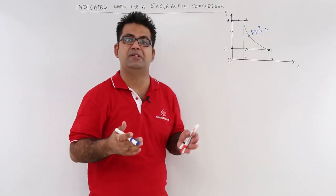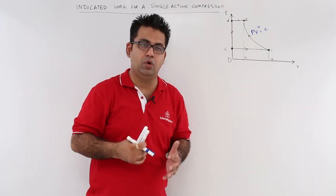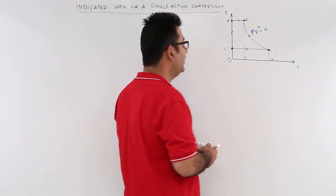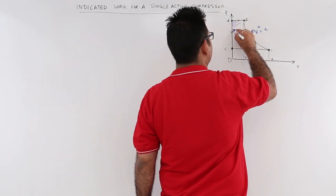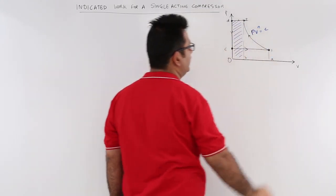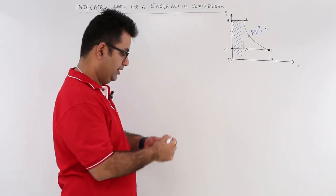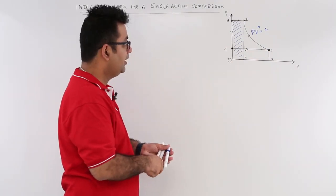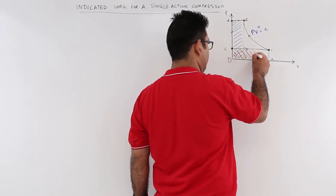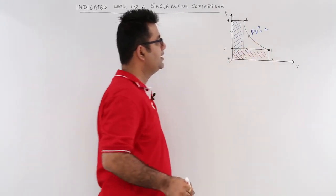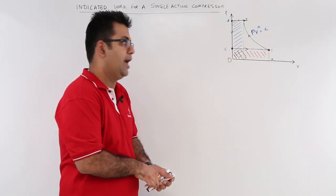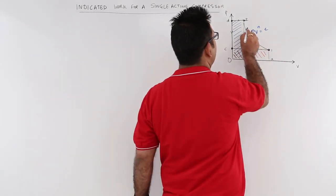Now you have three areas basically. The work below this plot gives you the work done. So you have three areas. The first area I will shade in blue. This is the first area that we will have to consider. The second area, let me take it in red. So this is the second area. And the third area that we will be taking, let me take that in black.